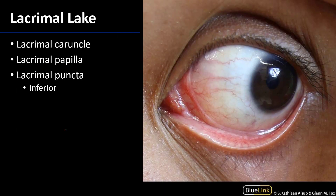Here on a living donor, we can see the accumulation of tears — that's the lacrimal lake. At the border of the lacrimal lake, there is a membrane called the plica semilunaris. This is a vestige of our third eyelid, and it is an infolding of the bulbar conjunctiva.